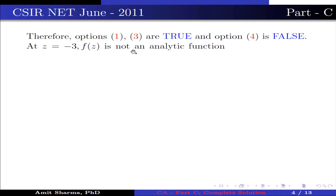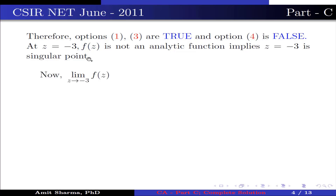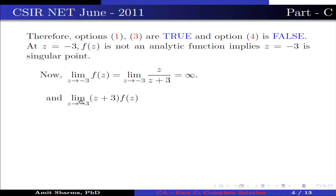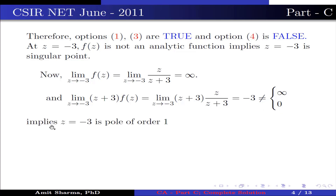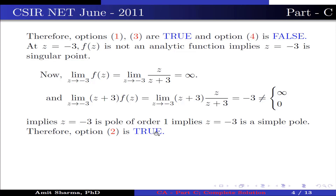At z = -3, f(z) is not analytic, so z = -3 is a singular point. Now limit z→-3 f(z) = limit z→-3 2/(z+3) = ∞. And limit z→-3 (z+3)·f(z) = 2, which is neither equal to infinity nor equal to 0. This implies z = -3 is a pole of order 1, i.e., a simple pole. Therefore option 2 is true. Hence options 1, 2, and 3 are true.